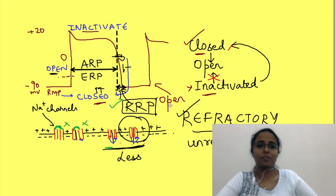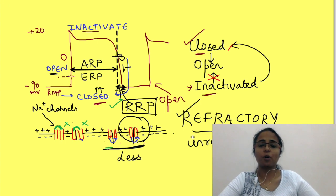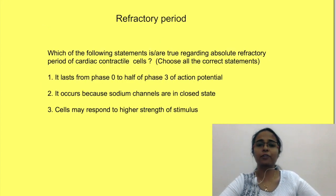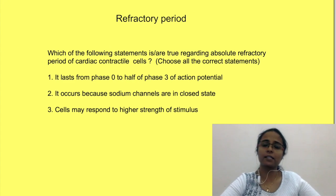So, from half of phase 3 to RMP is known as relative refractory period. That is, cell is unresponsive to normal stimulus but responds to a higher strength of stimulus. Now, let us come back to our original question. Which of the following is true regarding absolute refractory period of cardiac contractile cells?